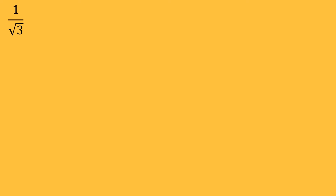Let's start with some simpler examples. For example, let's say we have 1 over the square root of 3. The question is, how can we rationalize the denominator? We just need to multiply both the top and the bottom of this fraction by the square root of 3. That way, we're going to get the square root of 3 divided by the square root of 3 squared, which equals root 3 divided by 3. And now we have 3 in the bottom, so we rationalize the denominator.